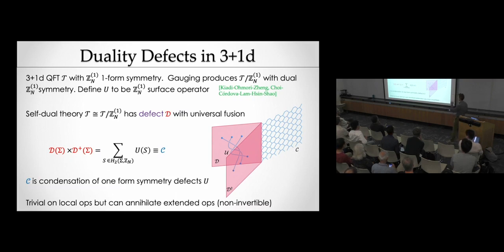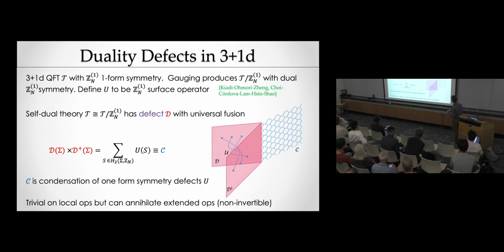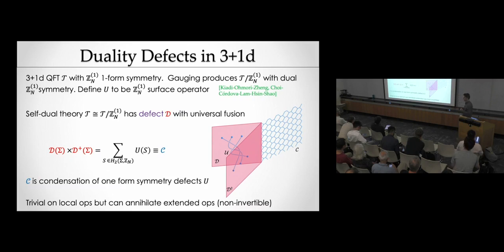What's the key fusion rule in 3+1D — the analog of D times D being a sum over group elements? It's this: D times D-dagger, which you might expect to be 1 if it were a unitary symmetry, is not 1 but instead a sum over the surface operators defining this ZN one-form symmetry. When you fuse D and D-dagger, you get this interesting sum over surfaces. This right-hand side is something you might call a condensation defect: we're condensing the operators defining the ZN one-form symmetry, but not everywhere in space-time — just along a sublocus — making a new topological defect.